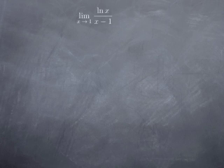What I mean by undetermined limits are things like this: the limit as x approaches 1 of ln(x) divided by (x minus 1). The top, ln(x), approaches ln(1) which is 0, and the bottom approaches 0 as well. So we have an undetermined form of the type 0 over 0.